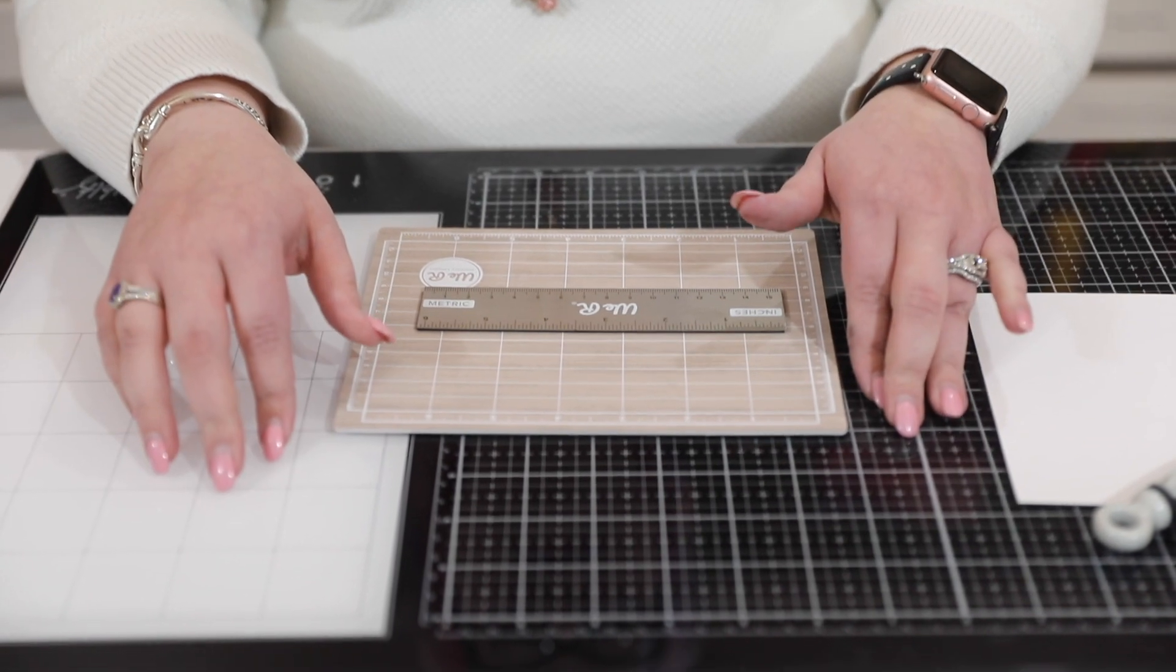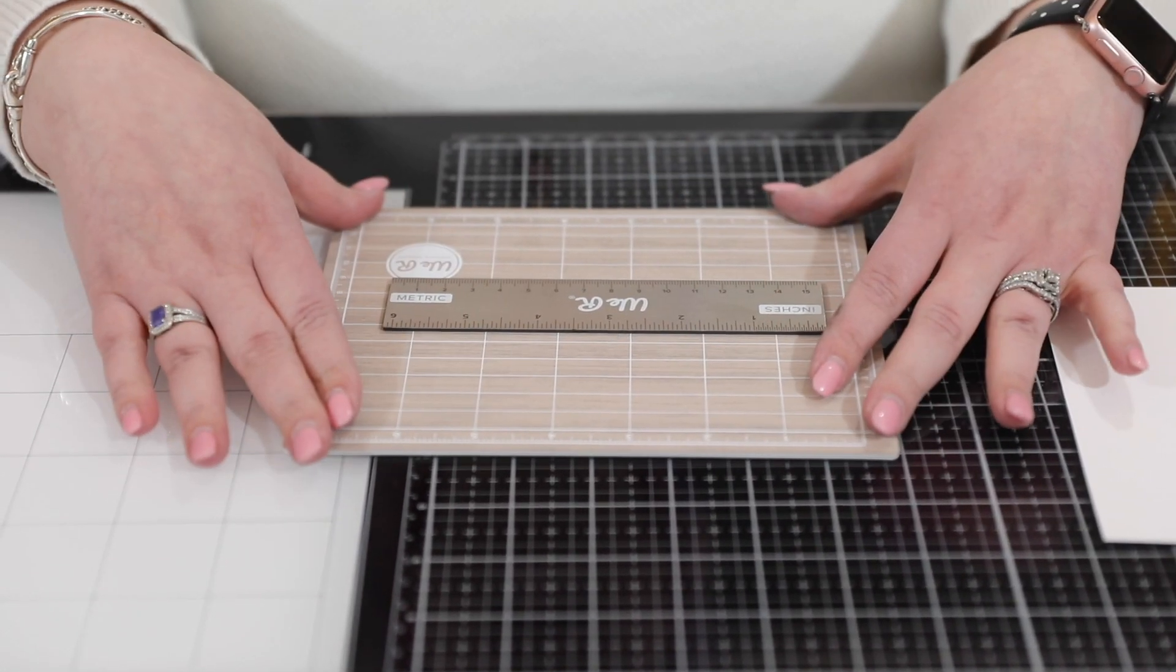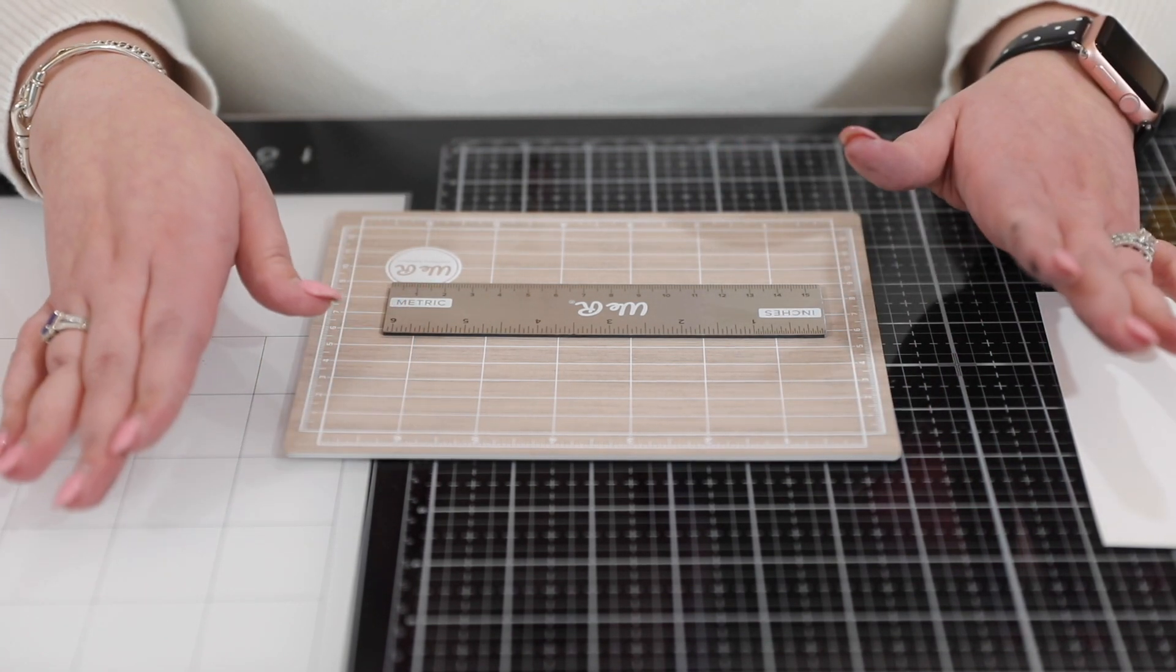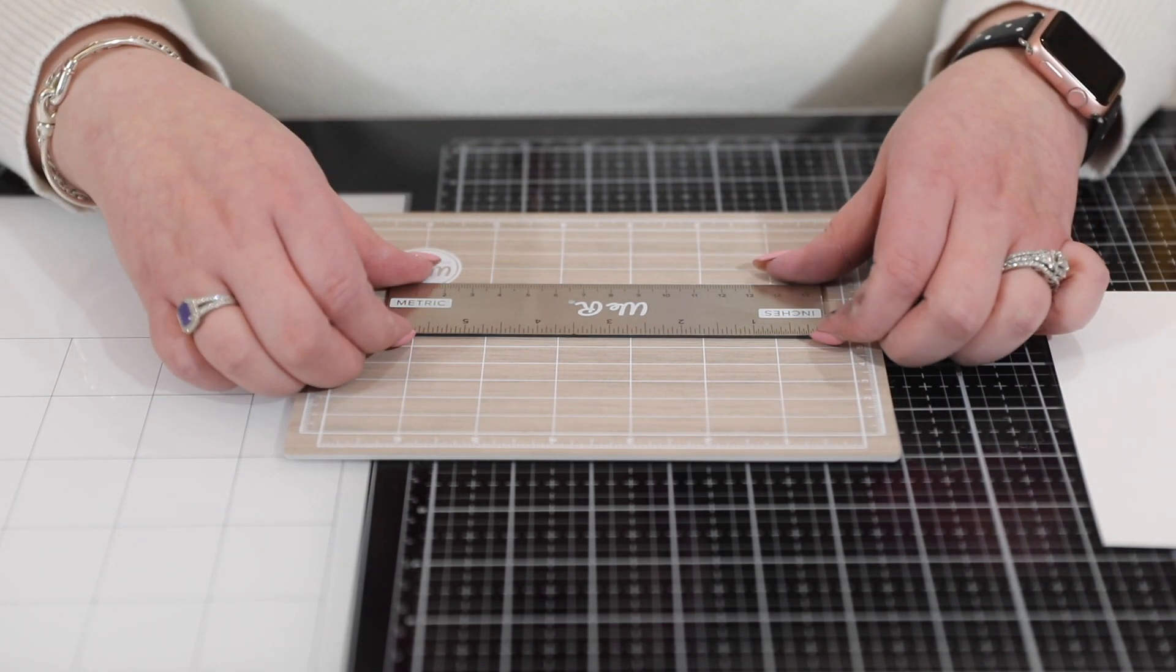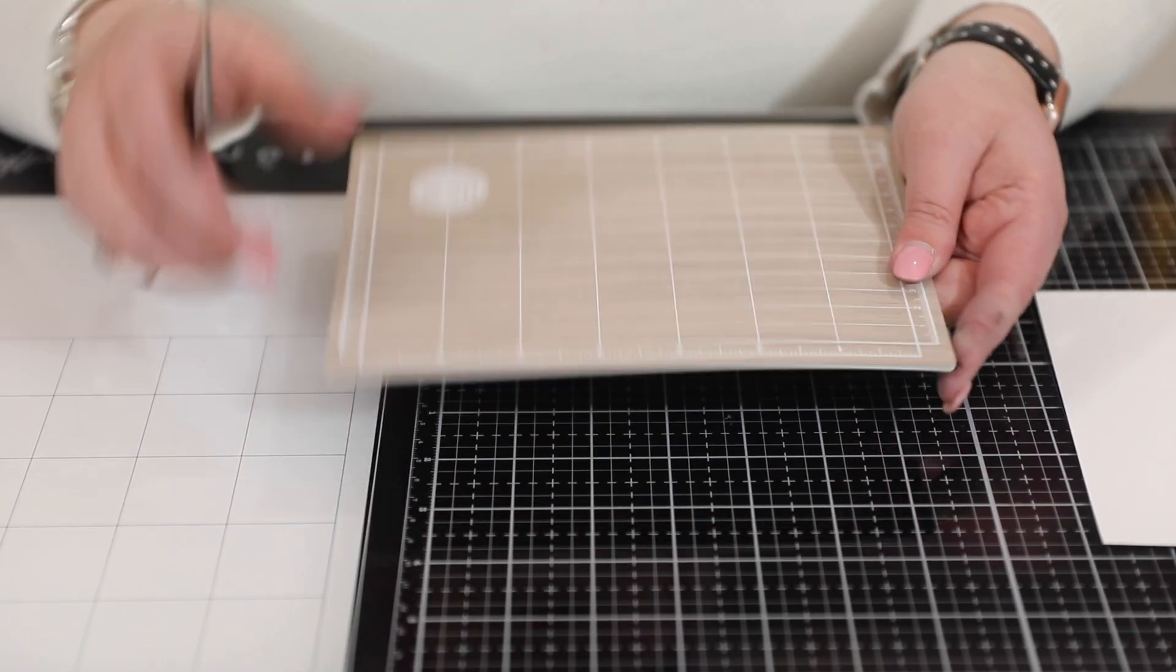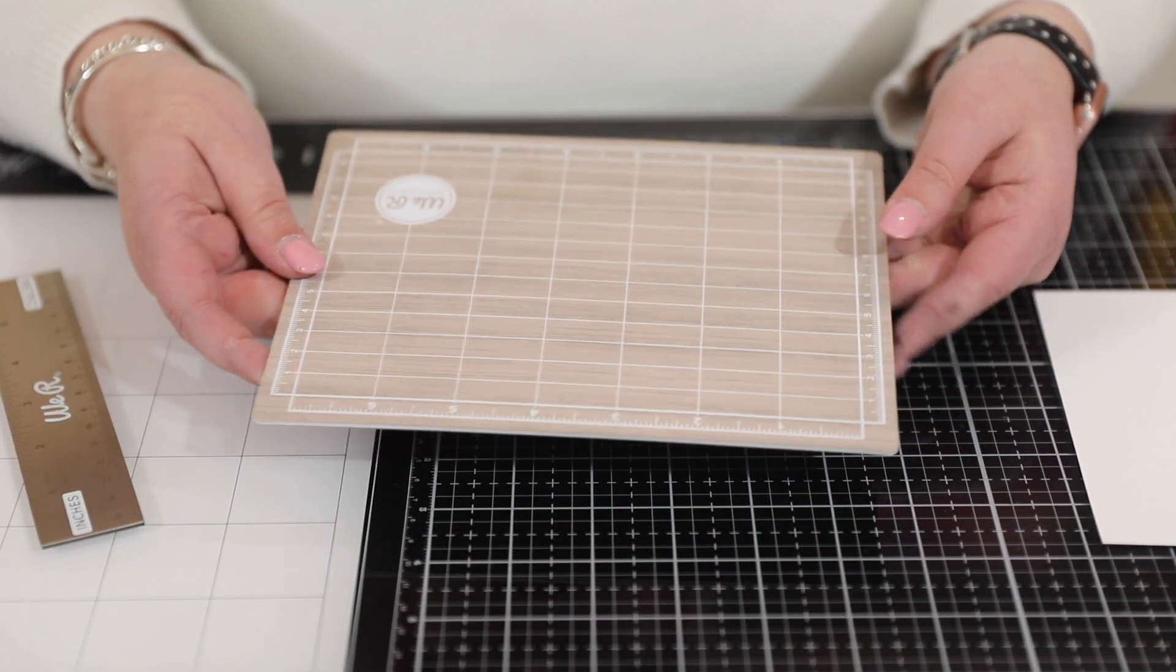Now I do have my glass mat, but sometimes I just want a little self-healing mat that I can do something on. I found this one and I've been really impressed by it, so I wanted to share it with you. It's a We Are Memory Keepers and it's magnetic as well. It's six by seven inches.